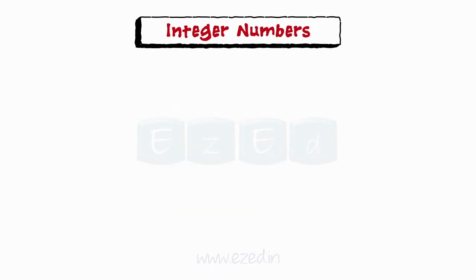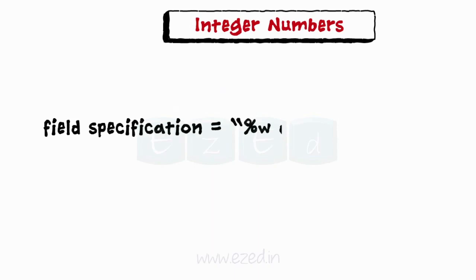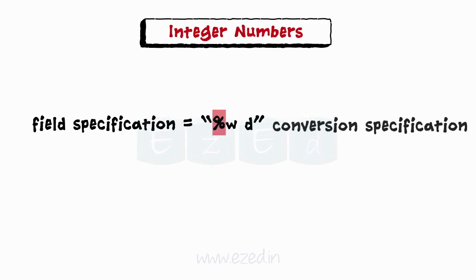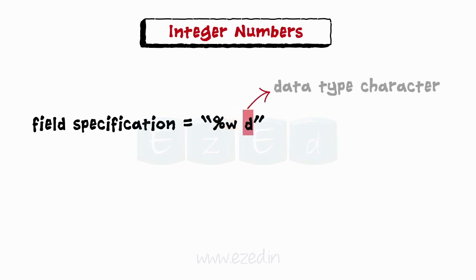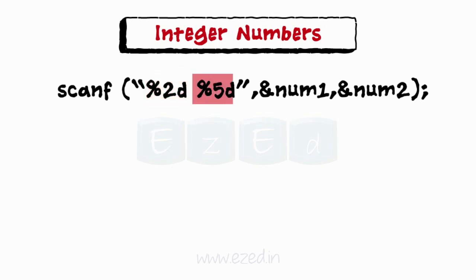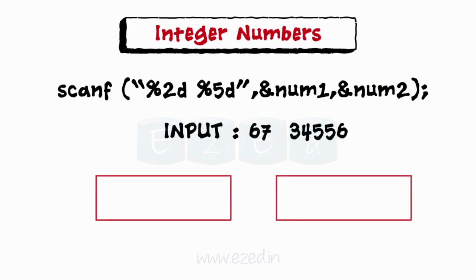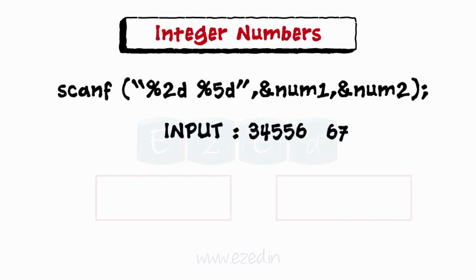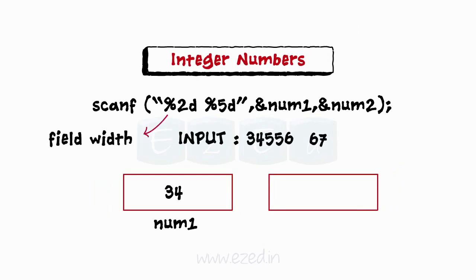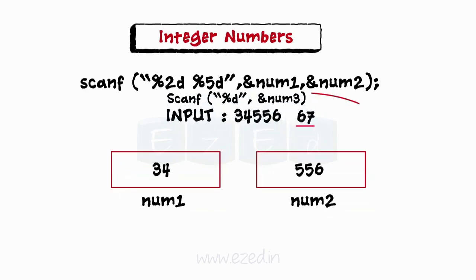Now let us learn to input integer numbers. The field specification for reading an integer number uses a percentage sign, which indicates that conversion specification follows. W is an integer number specifying the width of the input number, and d is the data type character indicating the number to be read is in integer mode. In this example, the scanf statement accepts two numbers as input and stores them in variables number1 and number2 respectively. If we enter 67 and 34556, then number1 is given 67 while number2 is given 34556. Now if we change the input format, number1 is assigned 34 as the field width is two characters, and the remaining part 556 would be assigned to number2.